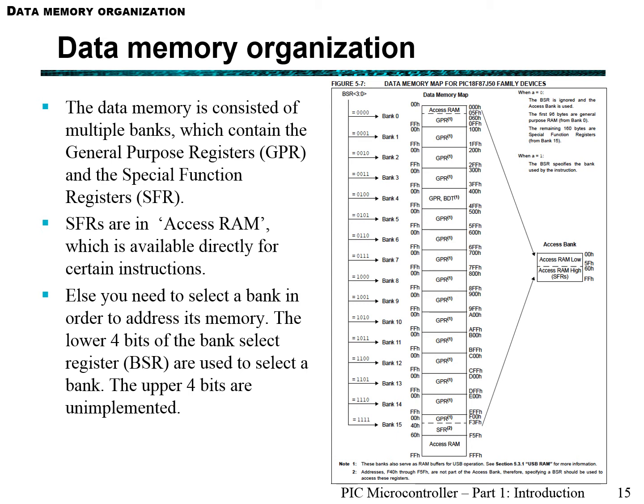When your program executes, it uses data memory. When you declare a variable, that variable is allocated to memory in your general-purpose registers. In microcontrollers, when we address a specific memory register, we can use 8 bits. However, in our PIC18, we have too much memory for 8 bits to refer to which specific general-purpose register. That's why they introduced the idea of a bank, where each bank consists of 8 bits worth of memory, or 256 addresses. We have 16 banks.